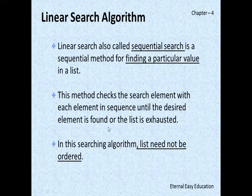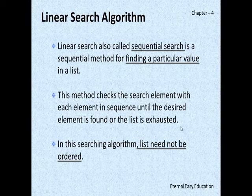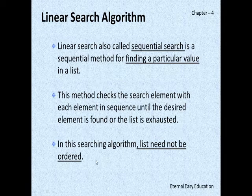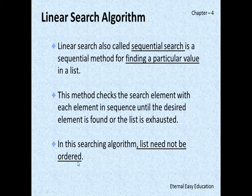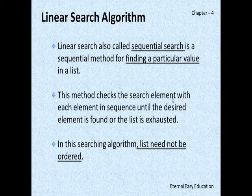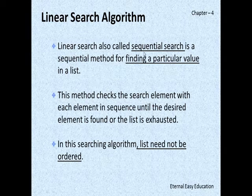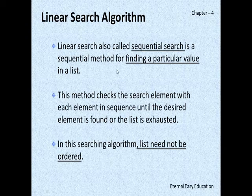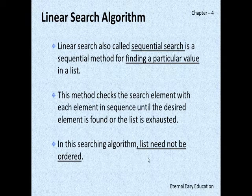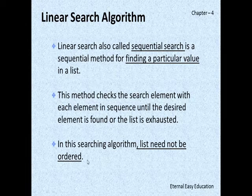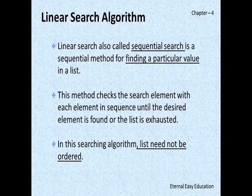In this searching algorithm, the list need not be ordered. So we must know two points about linear search algorithm: first, it is going to search sequentially; next, the list need not be ordered. That means there is no need to be in ascending order or in descending order.